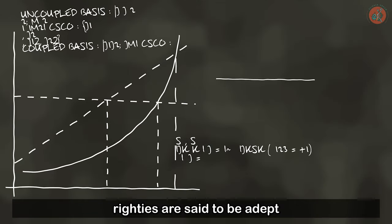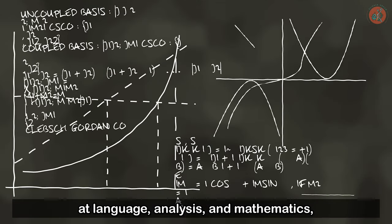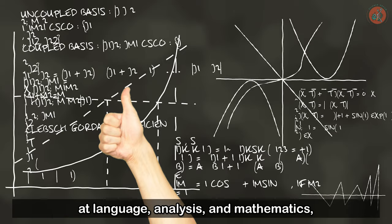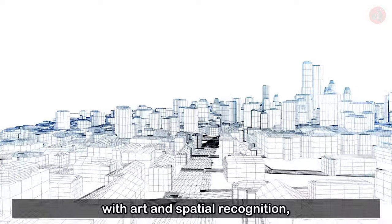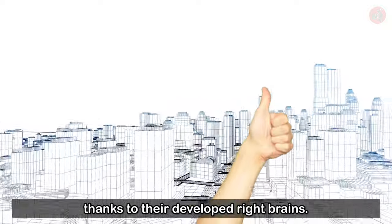In a similar vein, righties are said to be adept at language, analysis, and mathematics, while lefties are said to be more proficient with art and spatial recognition, thanks to their developed right brains.